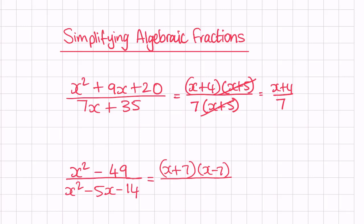If you factorize x squared minus 5x minus 14, we get x minus 7 and x plus 2. When you factorize quadratics, always double check your answers — confirm that minus 7 plus 2 gives the sum and minus 7 times 2 gives minus 14. It does. Now we can see x plus 7 and x minus 7 on the top, and x minus 7 and x plus 2 on the denominator.